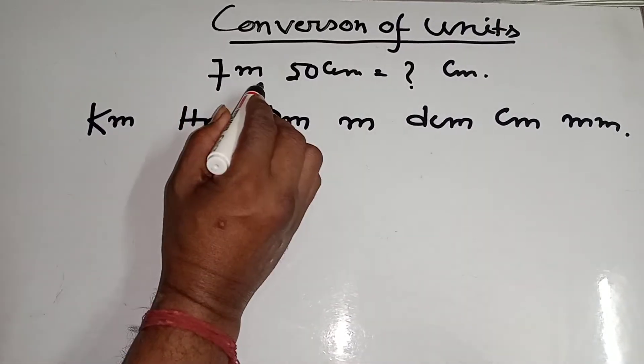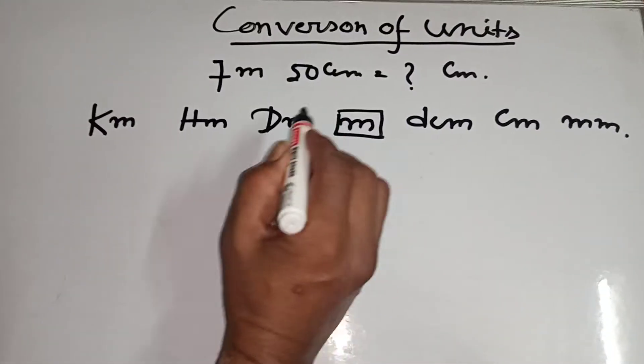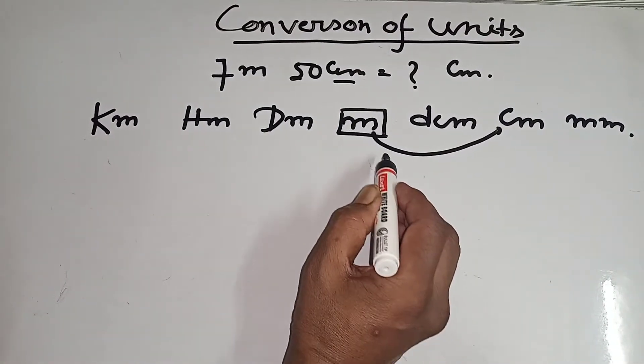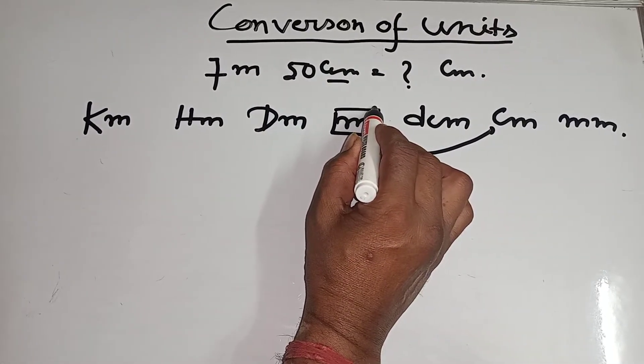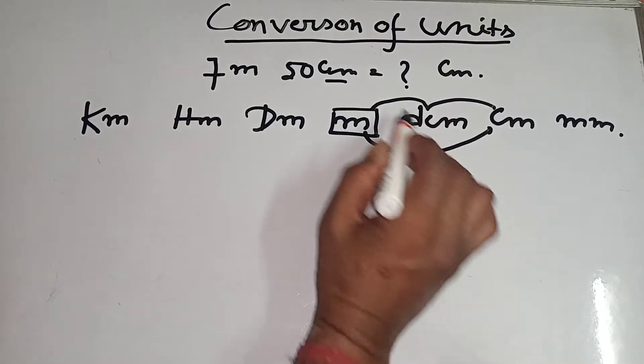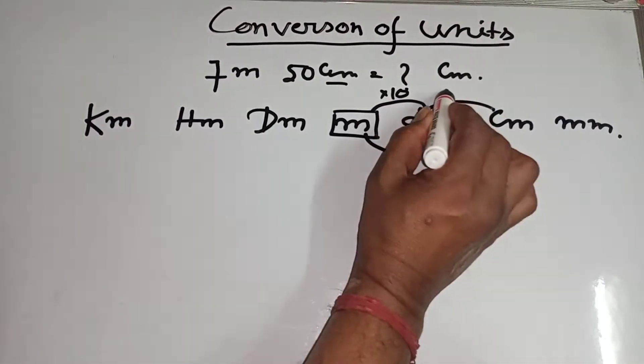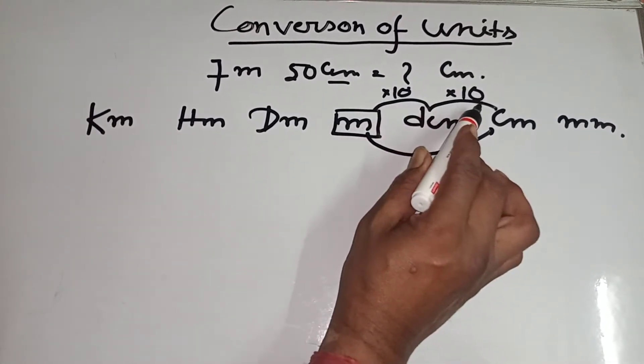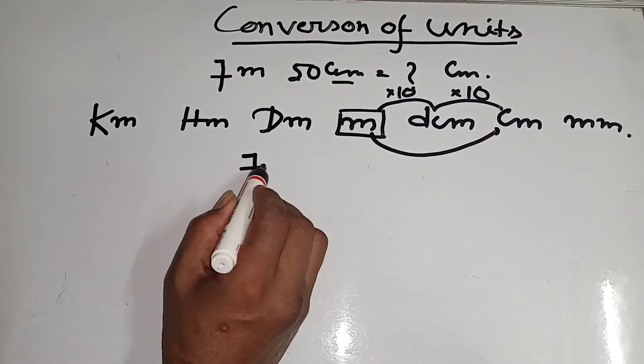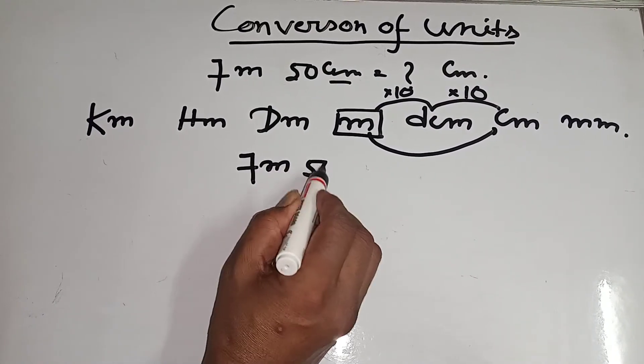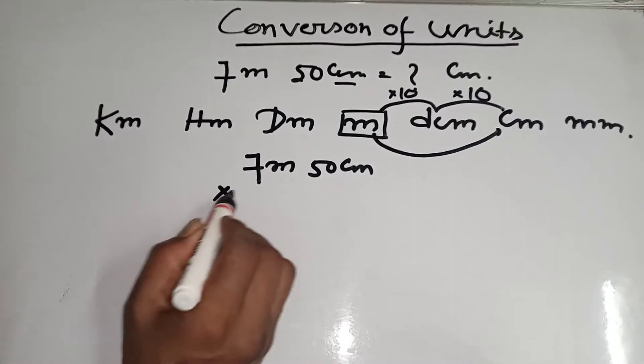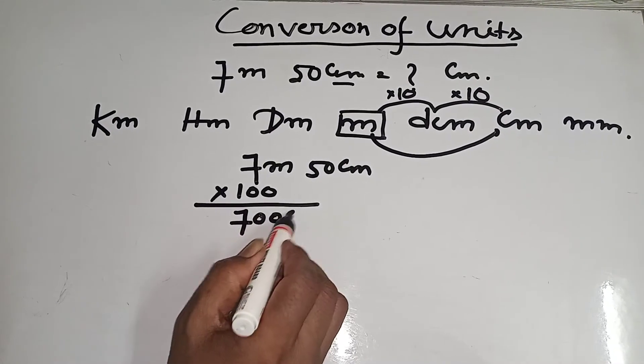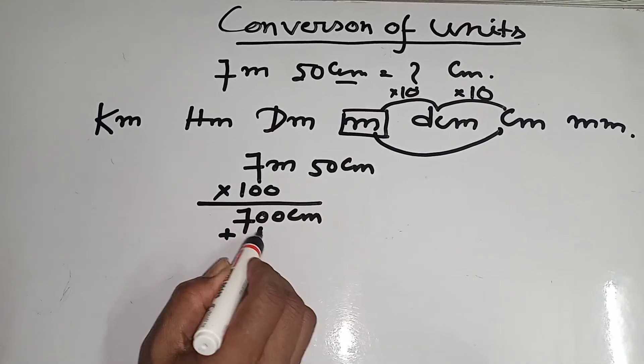Now here is given 7 meters, that means this one you will go centimeter. That means here per gap you will multiply by 10, that means 10 into 10, here is into 10, here is into 10. That means you will multiply by 100.